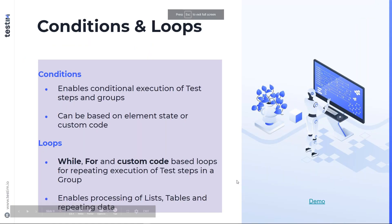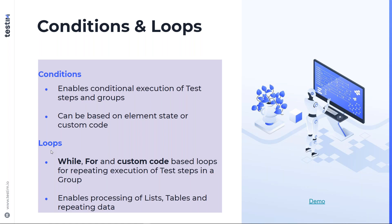The next topic is conditions and loops. Testim supports conditions, which enable you to execute test steps or groups based on certain conditions — whether an element is visible, whether element is not visible, whether you can see certain text, or whether custom JavaScript code returns true. An example would be: if I'm already logged in, I don't want to run the steps to log in. Similarly, Testim also provides loops to run through repeating sets of test data, enabling you to process lists, tables, or repeated data.